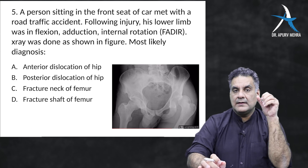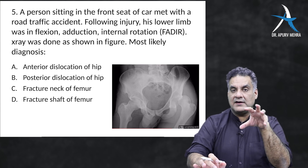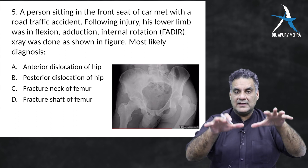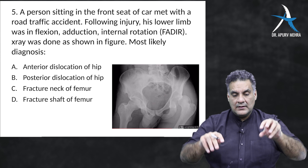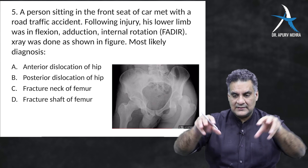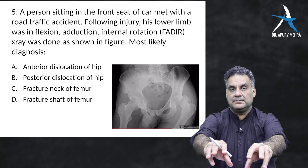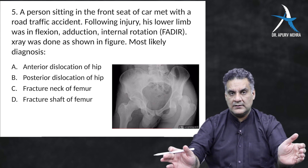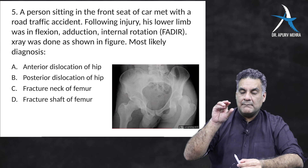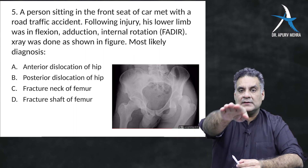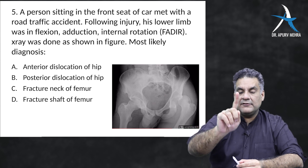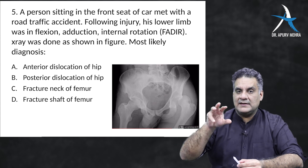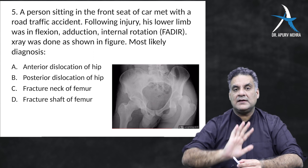Question five: a person sitting in the front seat of a car has an accident. The knee strikes against the dashboard. If that impact goes in the line of the femur, it will dislocate the femur posteriorly — this is called a dashboard injury with posterior dislocation of the hip.